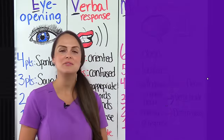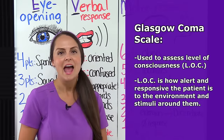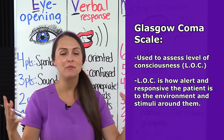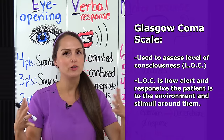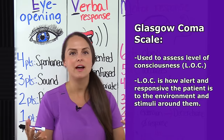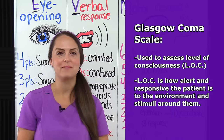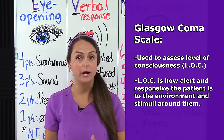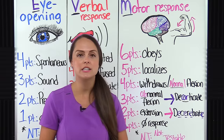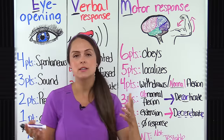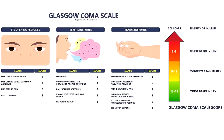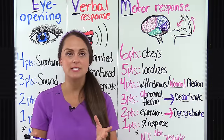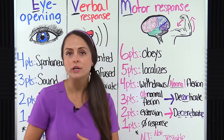The Glasgow Coma Scale is used to assess a patient's level of consciousness — how alert and responsive a patient is to their environment and the stimuli around them. Good brain functioning is required to be alert and responsive. Therefore, this tool is really helpful in evaluating patients who've experienced traumatic brain injuries or other conditions where brain functioning and consciousness is altered, and we can use it to calculate a specific score. In practice, you may hear someone say their patient has a GCS of seven or a GCS of 10.